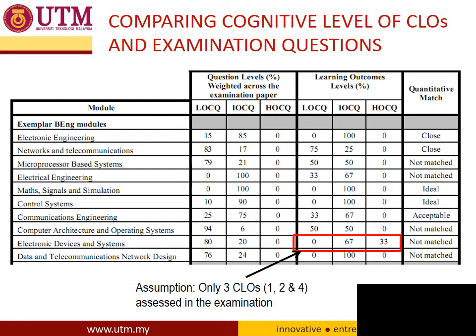You can also find courses where the alignment is ideal. For example, maps, signals and simulation shows ideal alignment between CLO levels and exam question levels. For control systems, it's not exact — about 90% intermediate order and 10% lower order — but still within acceptable limits since most questions align with the CLO. Whether a result is acceptable depends on the program coordinator's judgment.